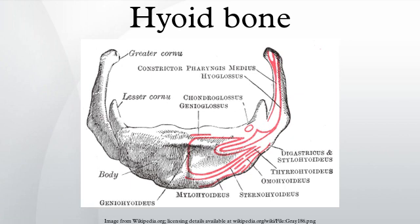The hyoid bone is present in many mammals. It allows a wider range of tongue, pharyngeal and laryngeal movements by bracing these structures alongside each other in order to produce variation. Its descent in living creatures is not unique to Homo sapiens, and does not allow the production of a wide range of sounds.